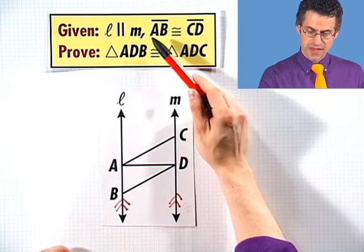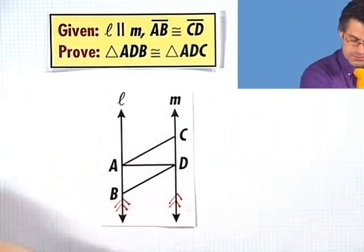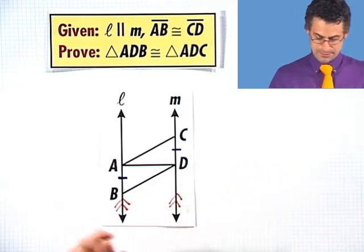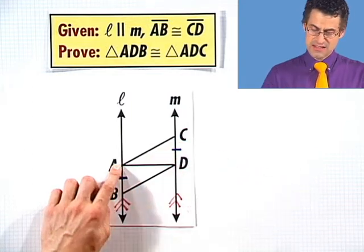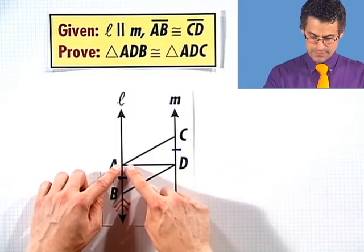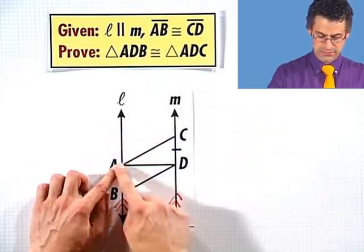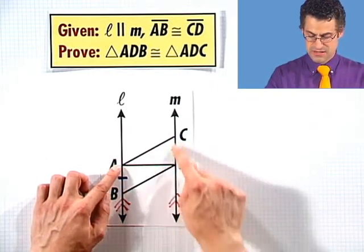I'm also told that line segment AB is congruent to line segment CD, so I'm going to mark that right here — this little segment is congruent to this little segment. And just knowing that and nothing else, we are supposed to prove that triangle ADB is congruent to triangle ADC. So this triangle is congruent to that triangle.